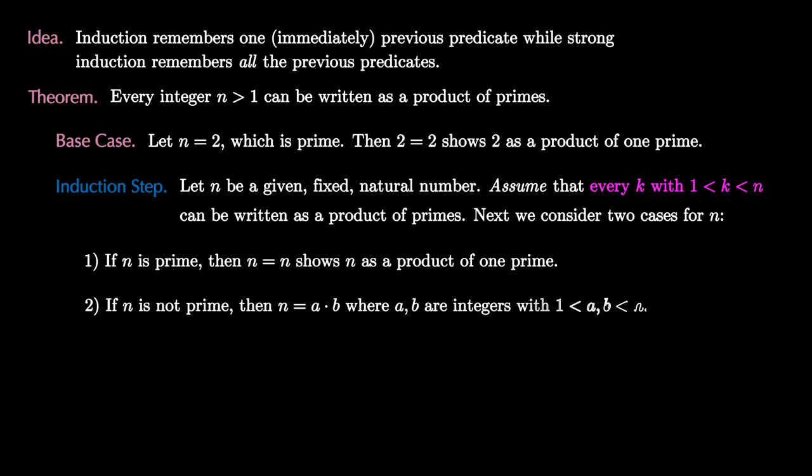In the case that n is not prime, then n equals a times b where a and b are integers between 1 and n. But by assumption, both a and b can then be written as the product of primes, as we see here.